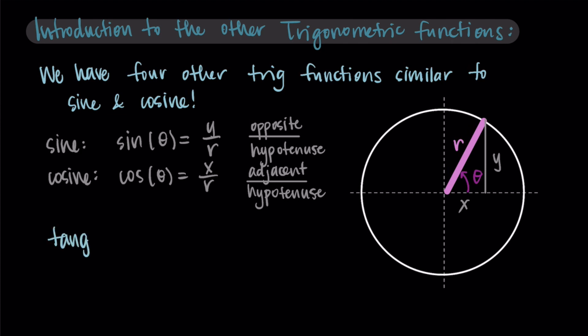First, let's talk about tangent and cotangent. We would say tangent of theta is y over x, or opposite over adjacent. Tangent is the most common other trig function that you'll see because it looks at the ratio of the x and y sides.